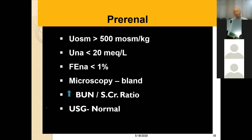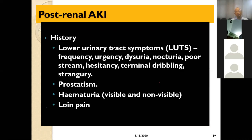In pre-renal cause, urinary osmolarity will be more than 500 milliosmol/kg. Urinary sodium will be less than 20 mEq/L because it will be reabsorbed. Fractional sodium will be less than 1%. Microscopy will be bland. BUN-to-creatinine ratio will be high. Ultrasonography will be normal because the main lesion is pre-renal, so no abnormality will be seen on imaging.